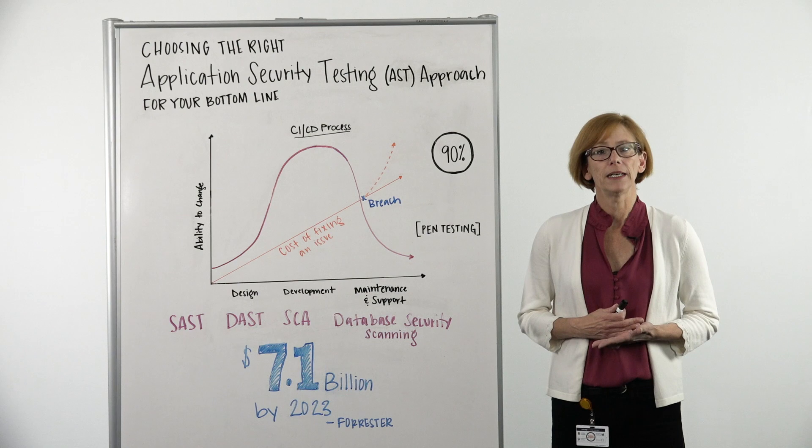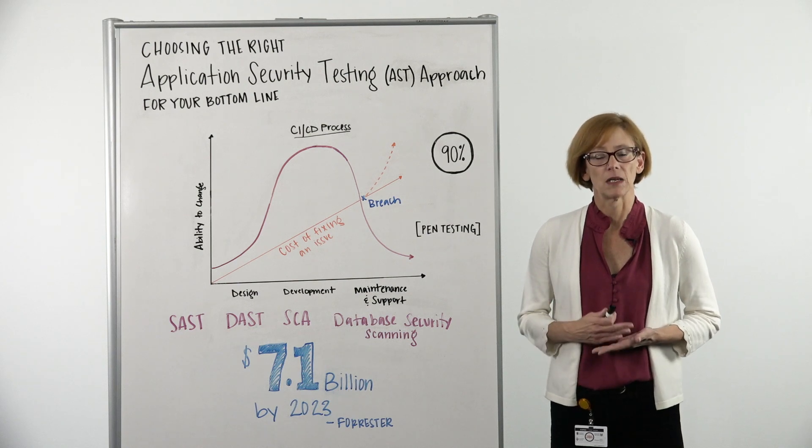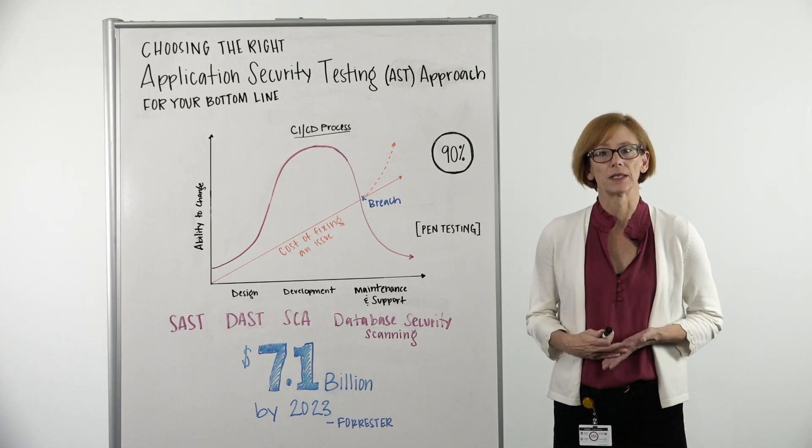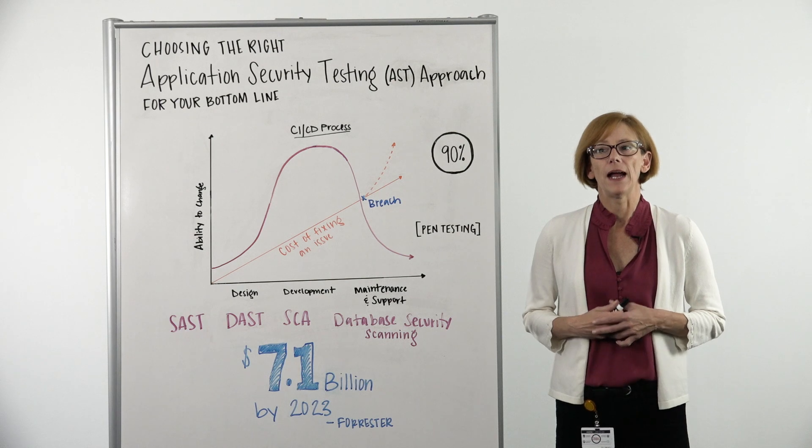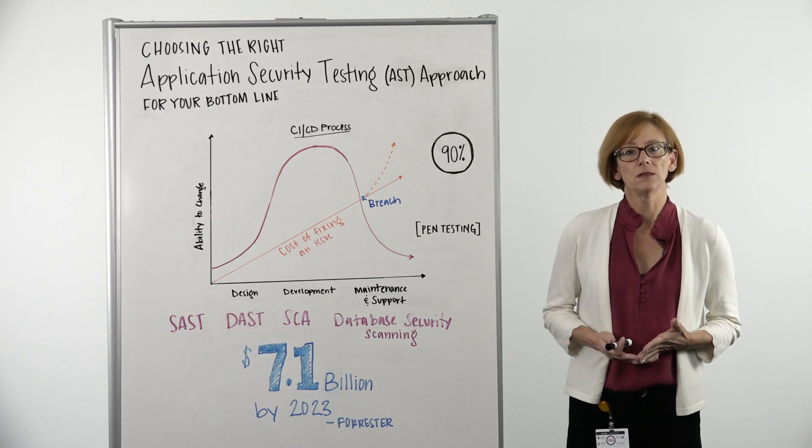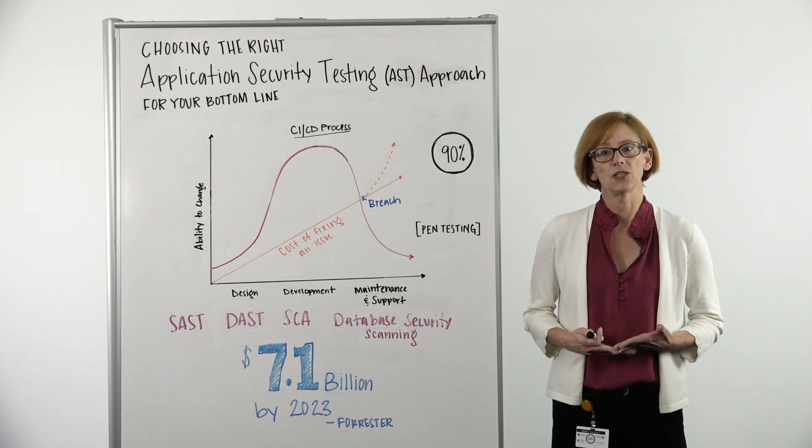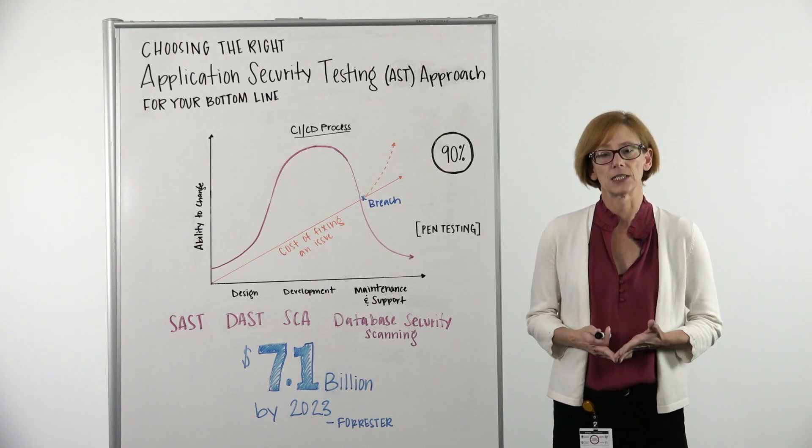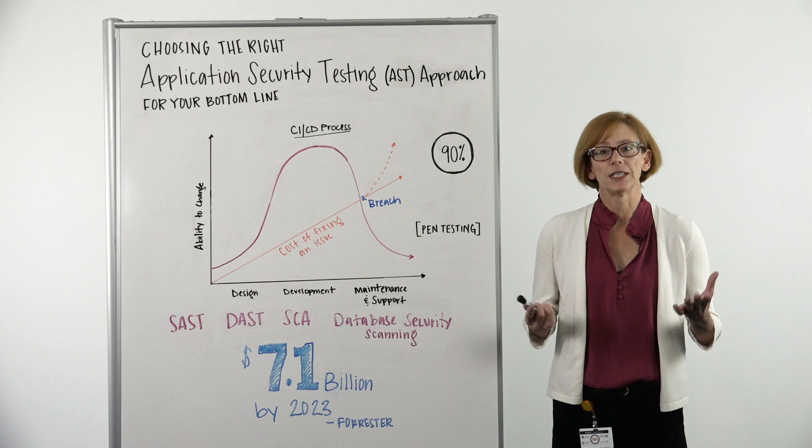Customers interact very quickly. Your applications have to be released very quickly. So as a result of adopting a CICD model for this fast-paced change into production, pushing things into production, security just can't keep up.